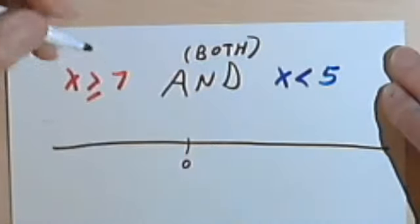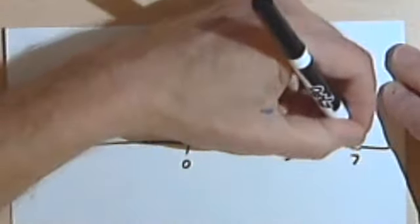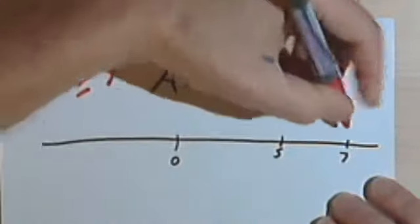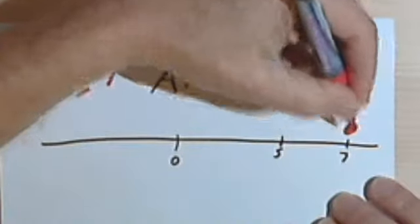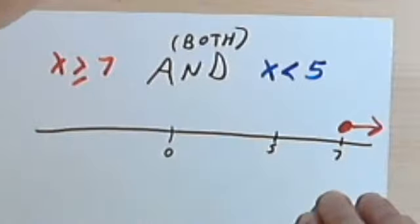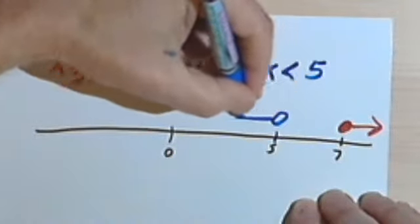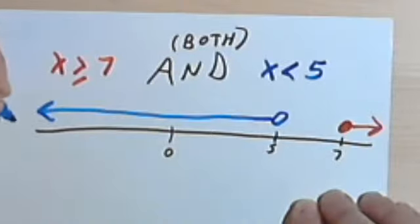So here's a 0, here's a 5, and here's a 7. Using the red pen for x is greater than or equal to 7, I'll fill in this circle here and go up to positive infinity. For x is less than 5, I'll use an open circle and go down to negative infinity.